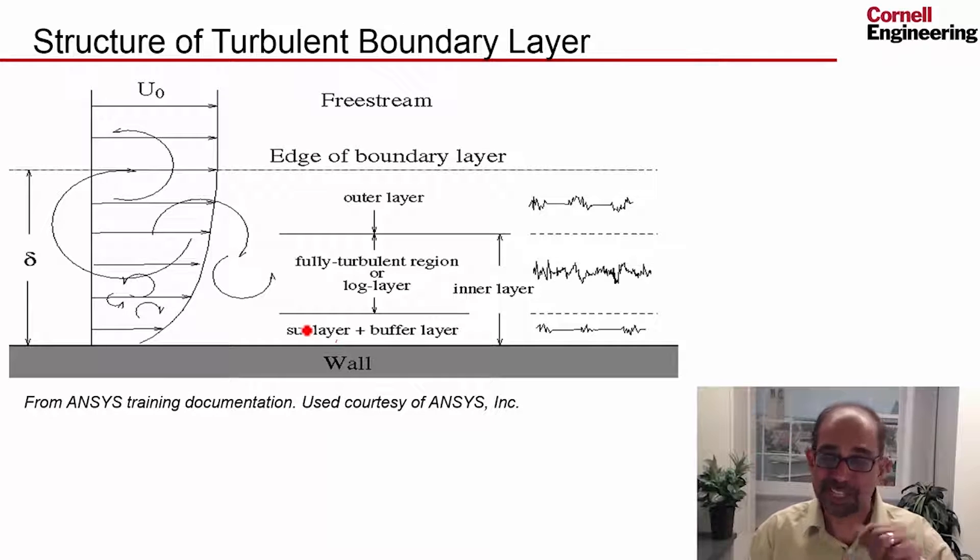And if you want to get a good drag prediction, actually you need to resolve the viscous sublayer. And that means that your mesh next to the wall has to be very fine. And then outside, if you go away from the viscous sublayer, you get this layer called the log layer. And we'll see on the next slide why it's called the log layer. And the buffer layer is a region between the viscous sublayer and the log layer. And this region is called the inner layer, and it has a predictable variation based on what people have observed in experiments.